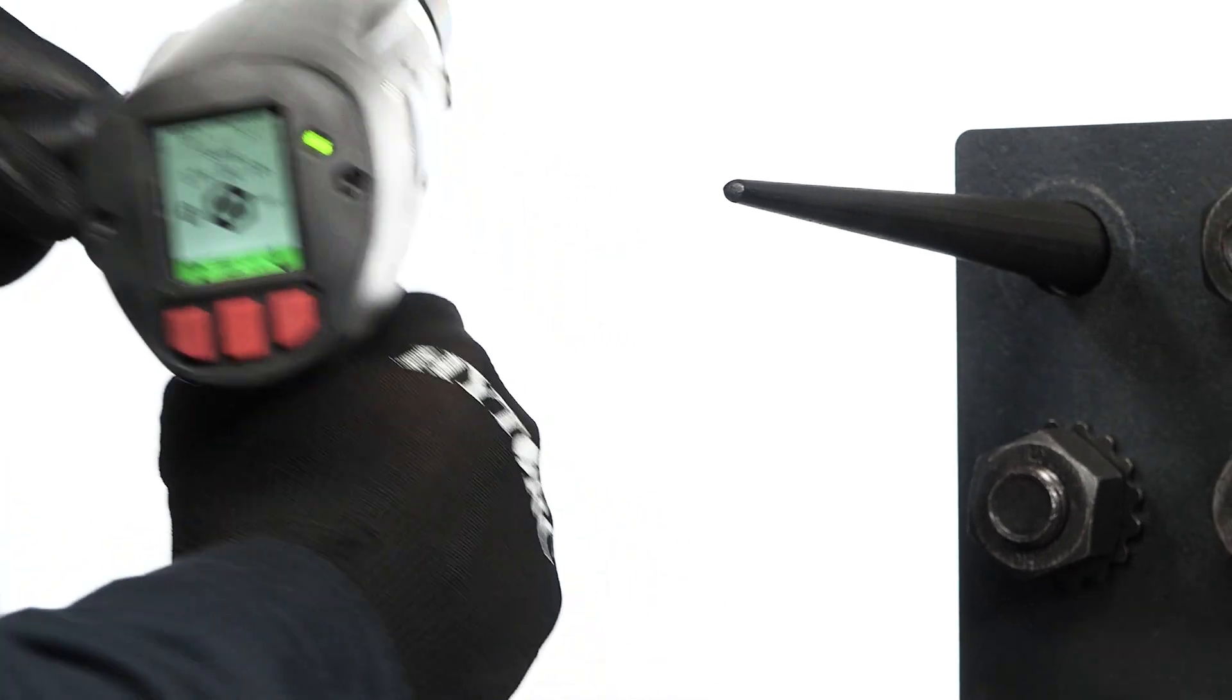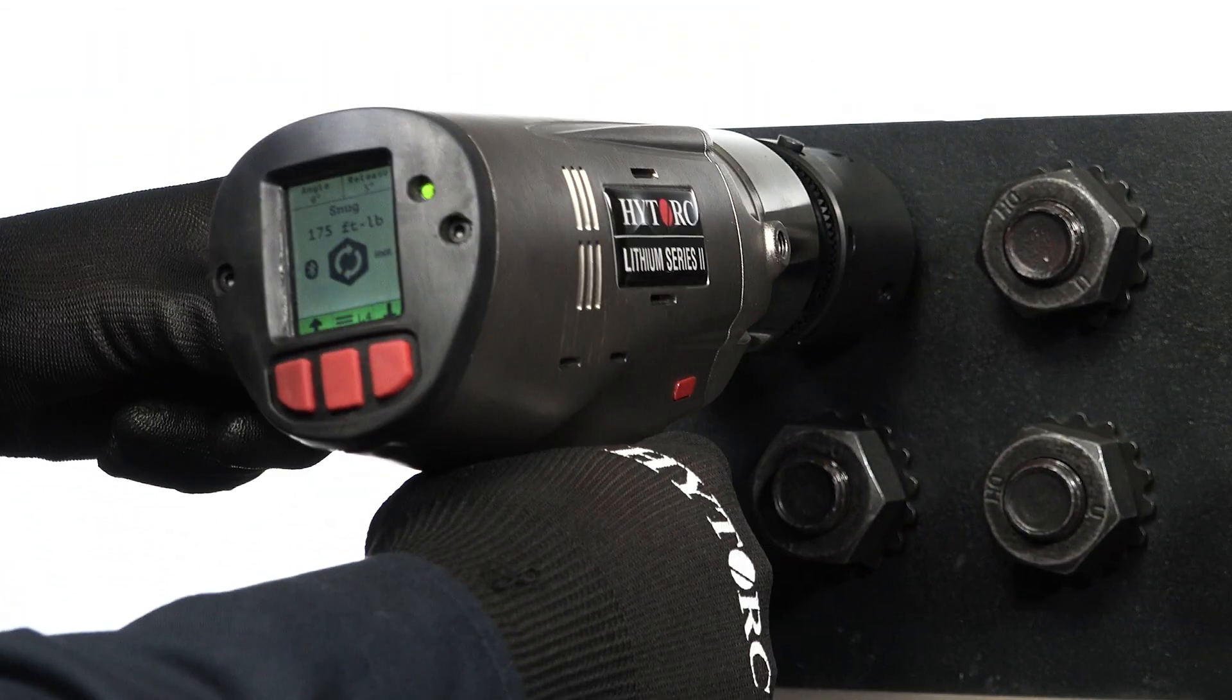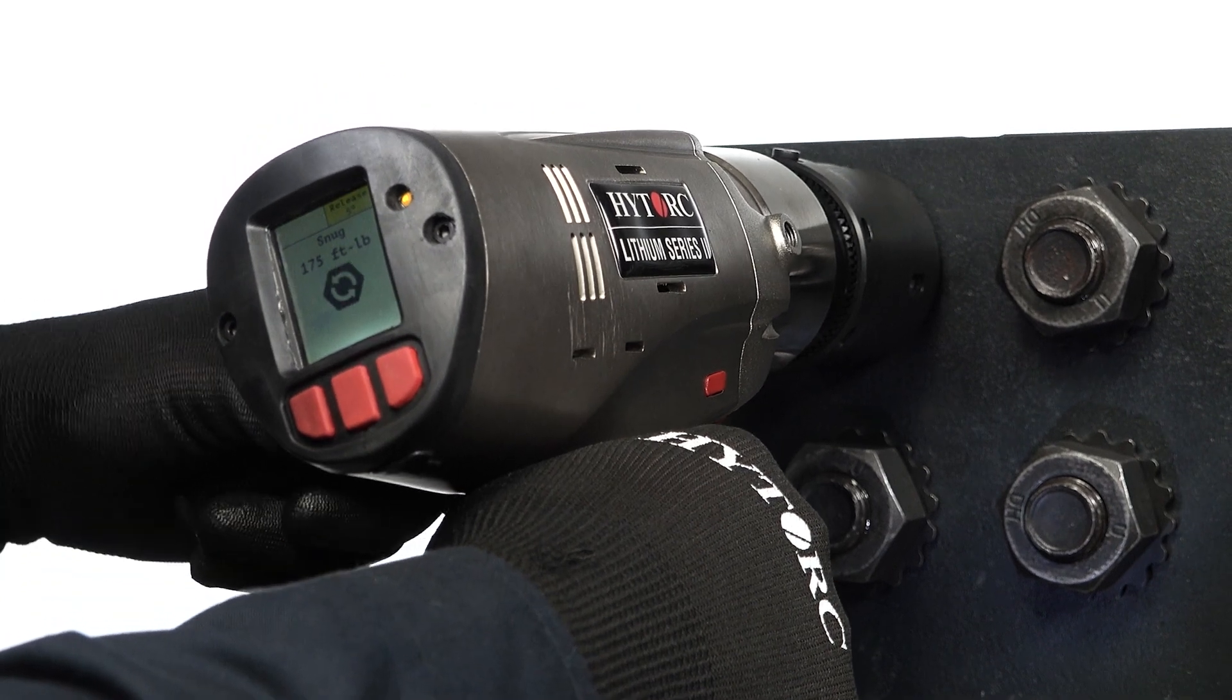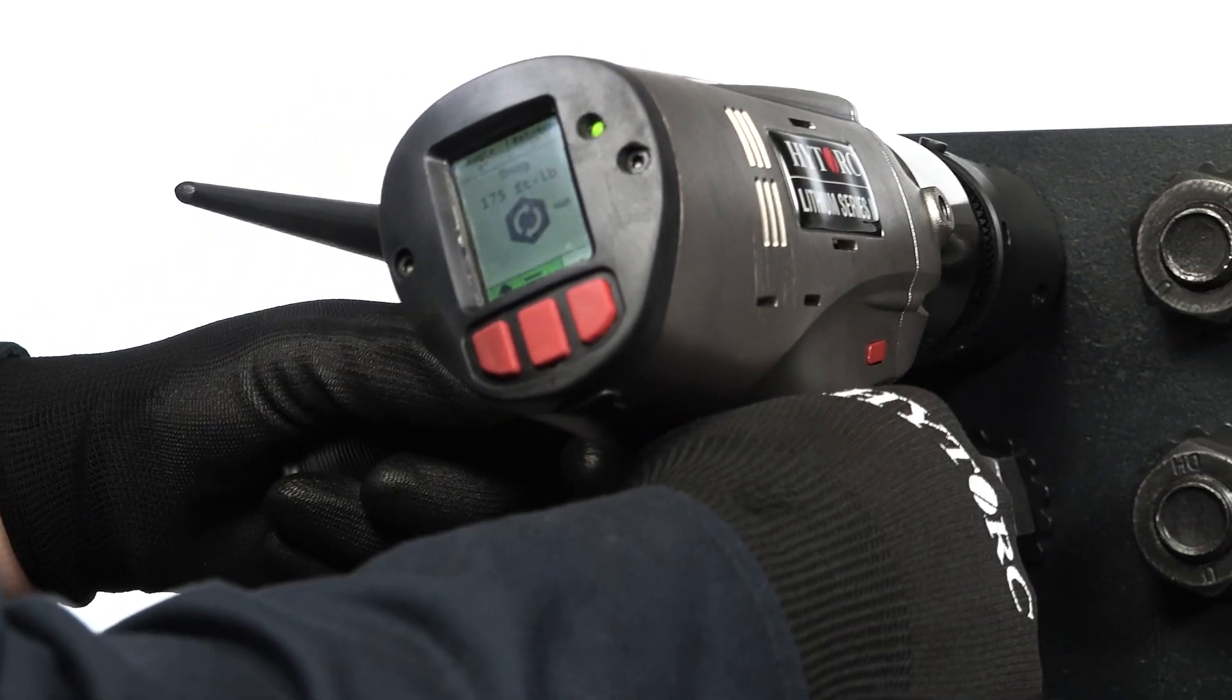Using the pre-selected torque that was used for snug tightening during PIV testing, compact the plies to a snug tight condition using the lithium series 2 tightening tool.